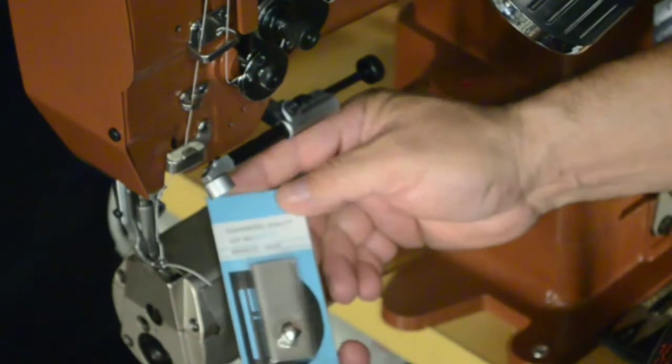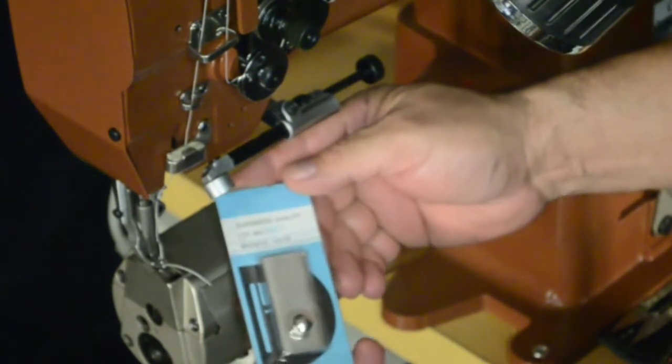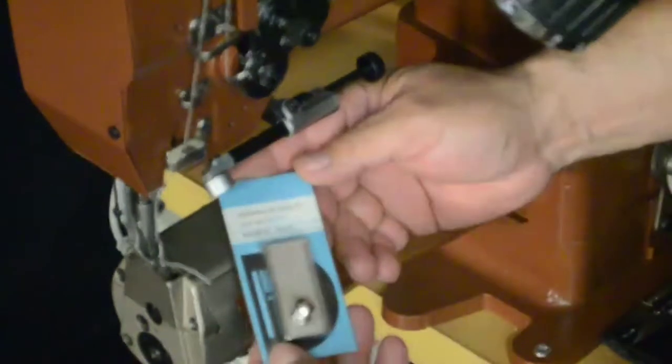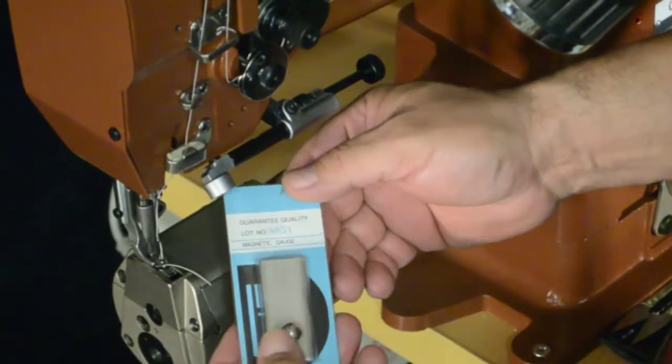This device that comes standard with your Cobra Class 26 machine is called a magnetic edge guide.